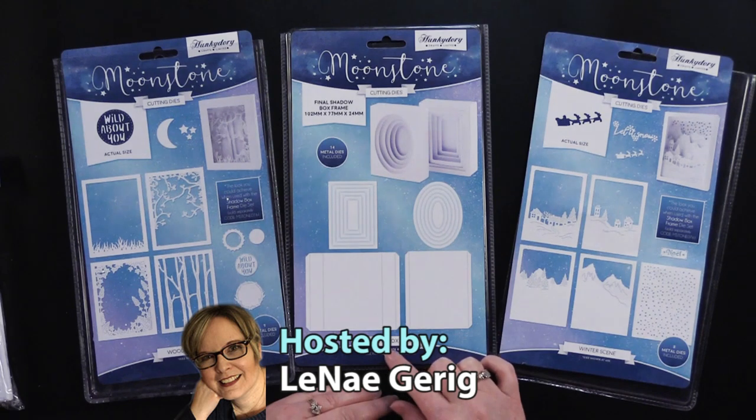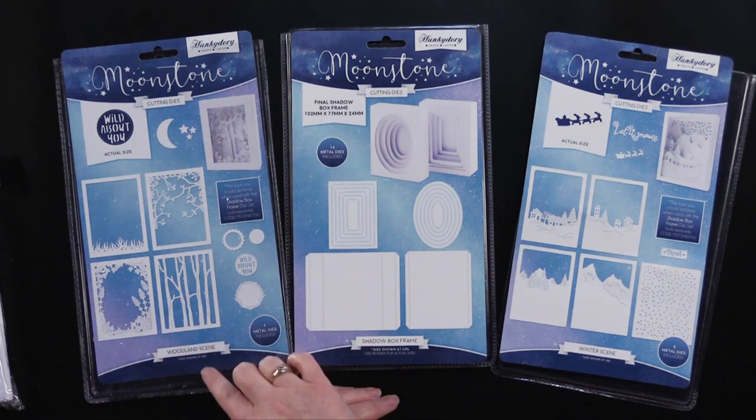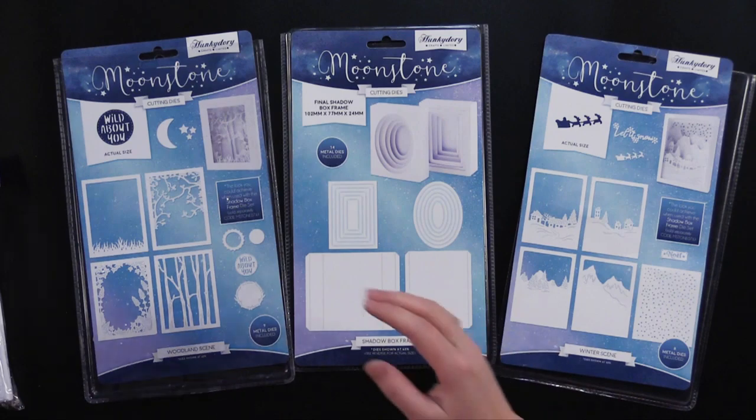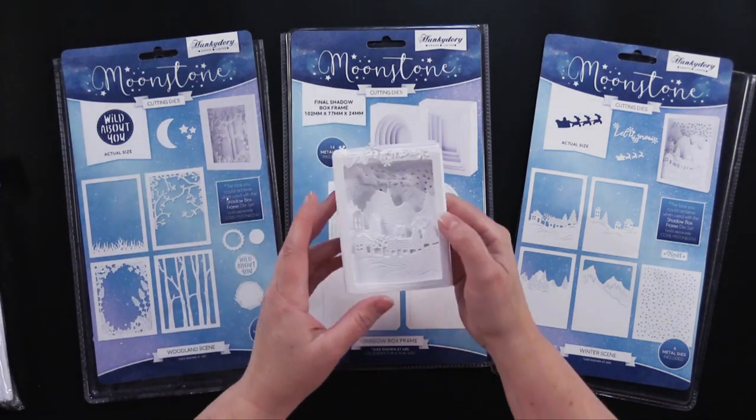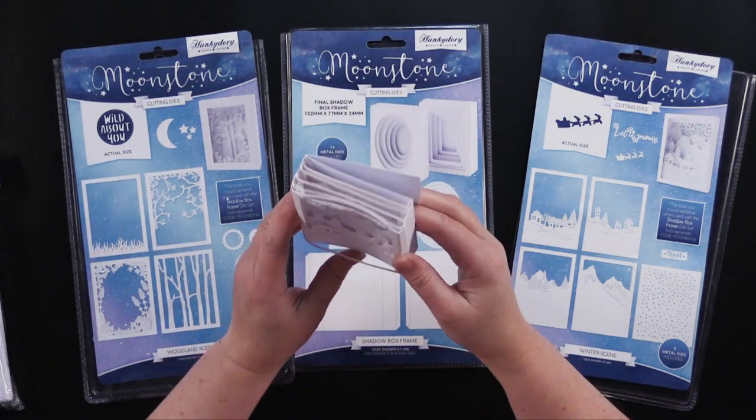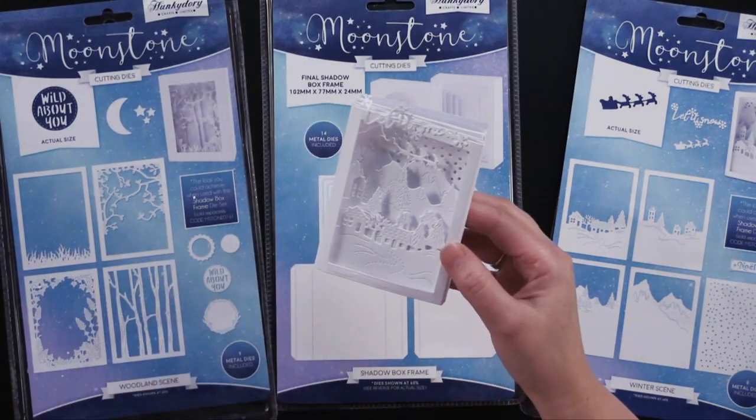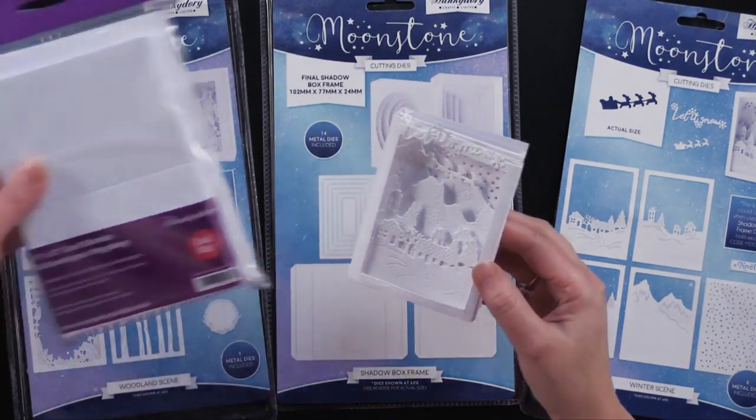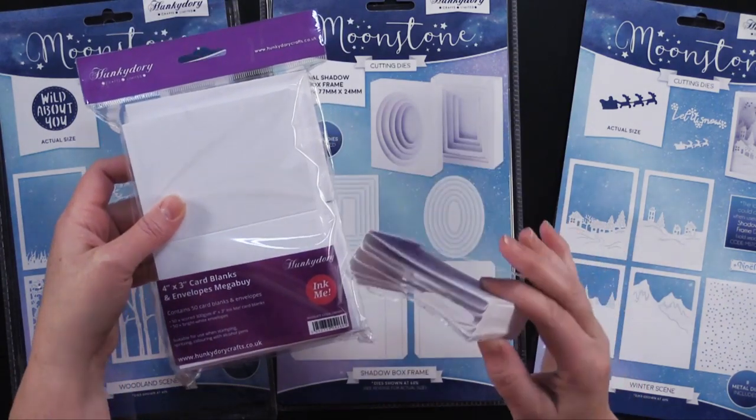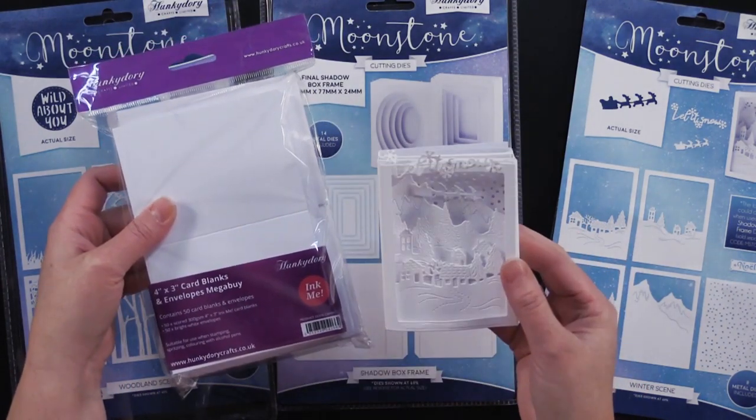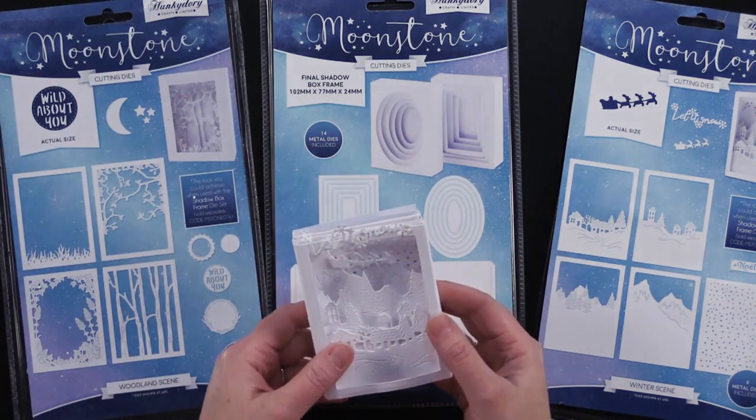This one is the shadow box frame, woodland scene, and winter scene, and they make these adorable little 3D shadow box cards. We also have these four by three card blanks that turn these little shadow boxes into cards and I'm going to show you how this all comes together.